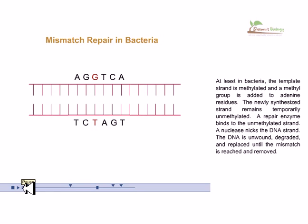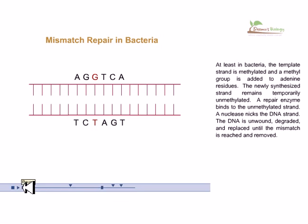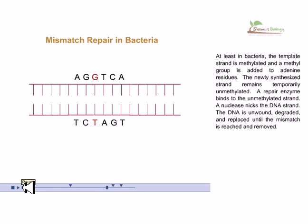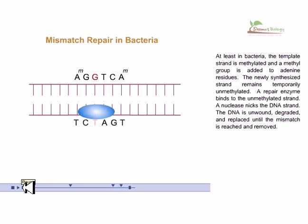A nuclease nicks the DNA strand, the DNA is unwound, then degraded and replaced until the mismatch is reached and removed. Here, methylation is used as the reference, then nicking is performed, followed by degradation and replacement of the incorrect sequence.